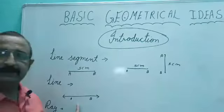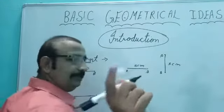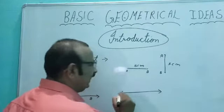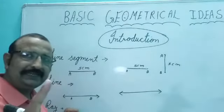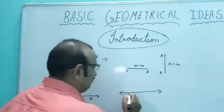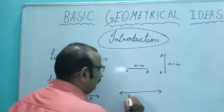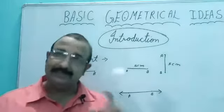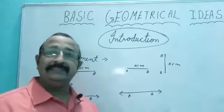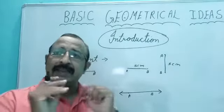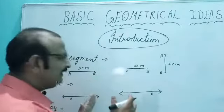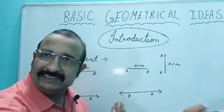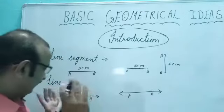Second comes the line. The difference between line segment and line - when there is a line, on both sides there are arrow marks. This is a line.